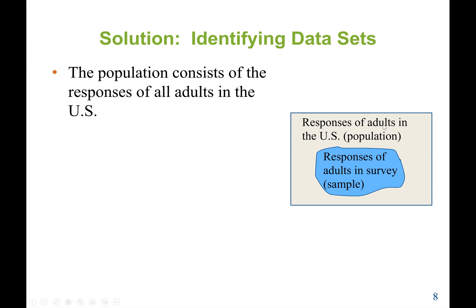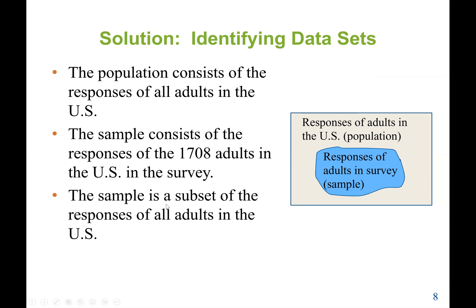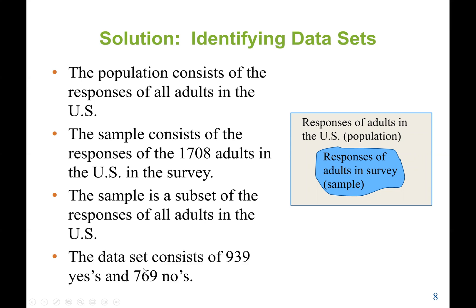Let's say the adult population is 200 million. We may take a sample of 2,000 — that 2,000 would be the sample, and the population is all U.S. adults. So the sample here consists of the responses of 1,708 adults who answered the survey. The data set consists of 939 yes responses and 769 no responses, totaling 1,708. It is a sample because it's part of the population of U.S. adults.